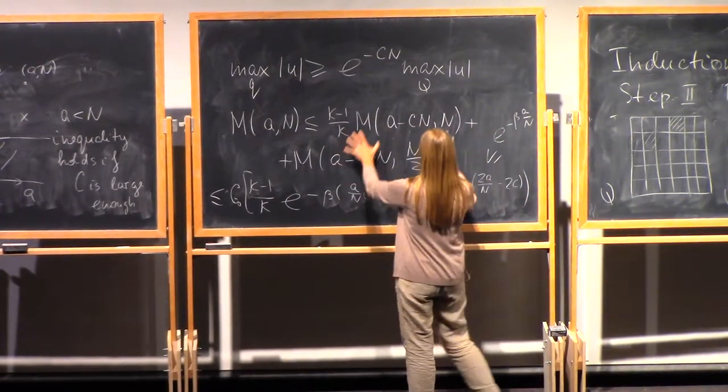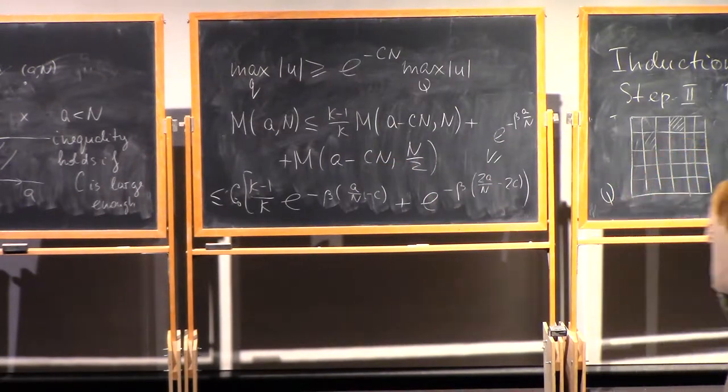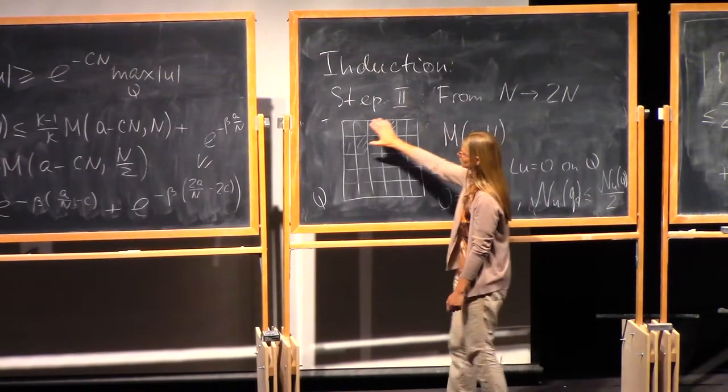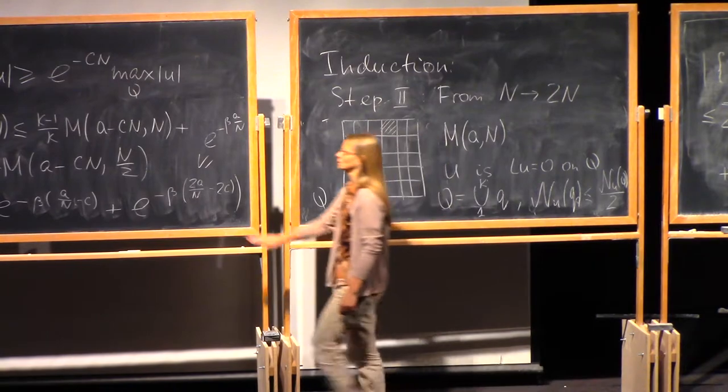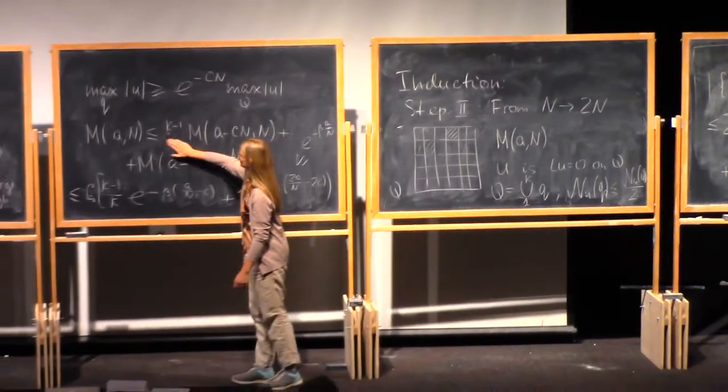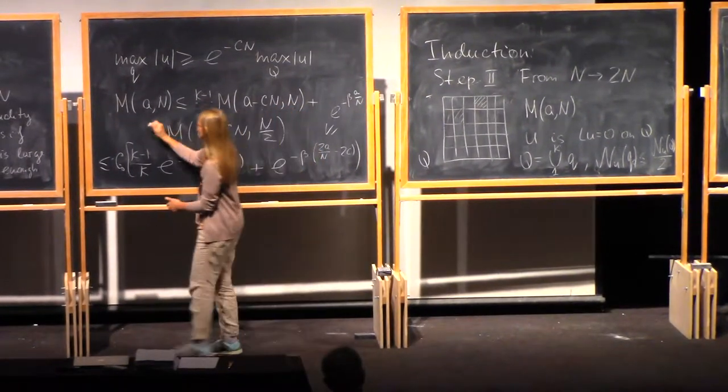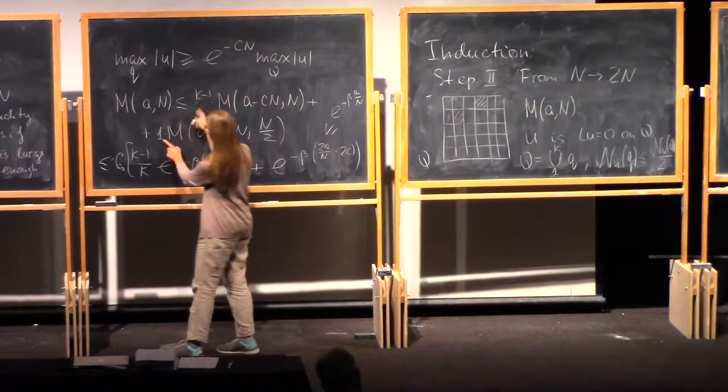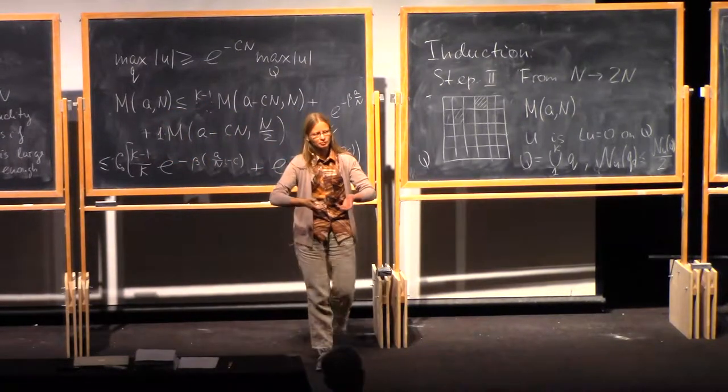So once again, where this inequality comes from, I divide cube into small ones. I have k minus 1 cubes like that and 1 cube like this one, but I have also renormalized the measure.